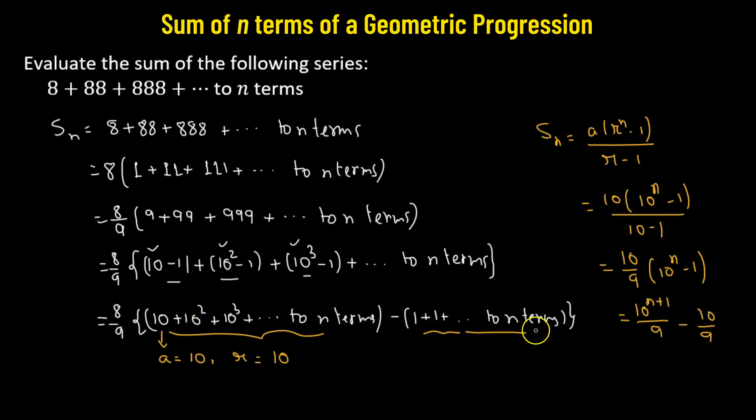And then we have 1 plus 1 added to itself n number of times. So this is simply 1 multiplied by n.